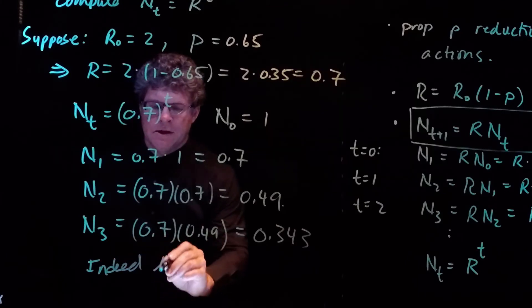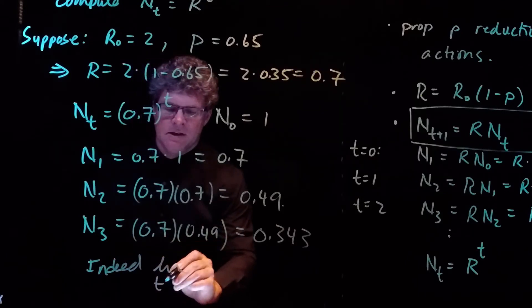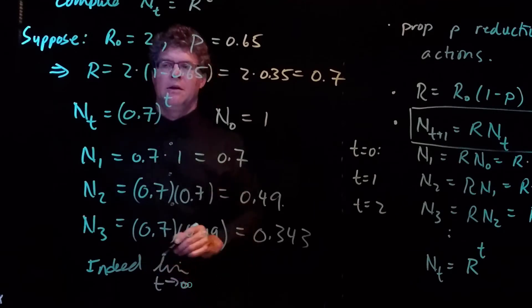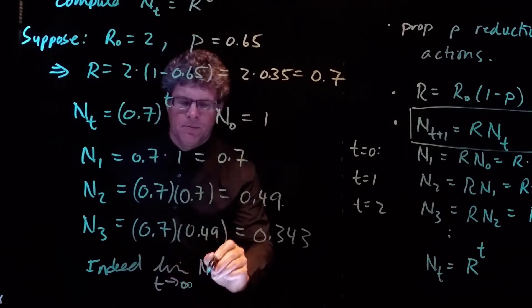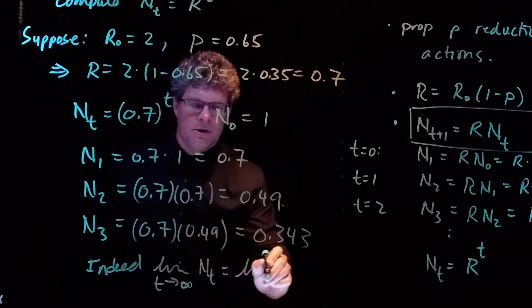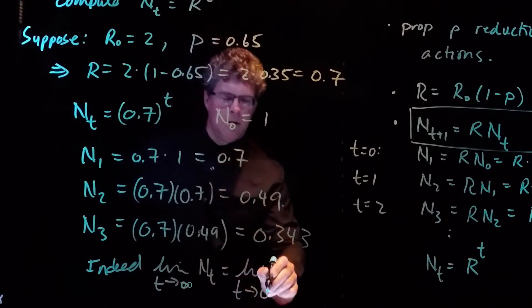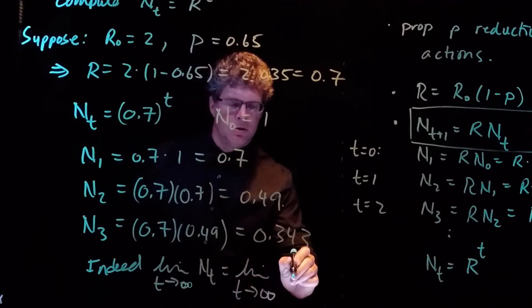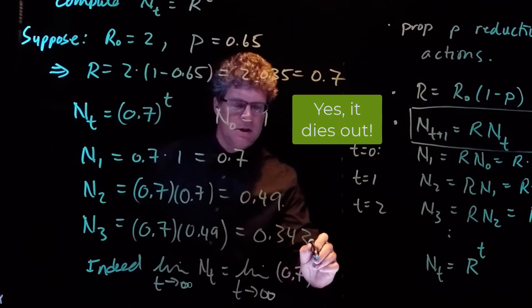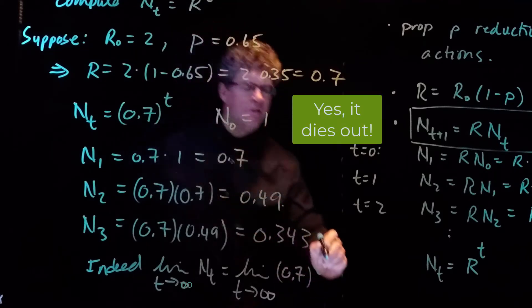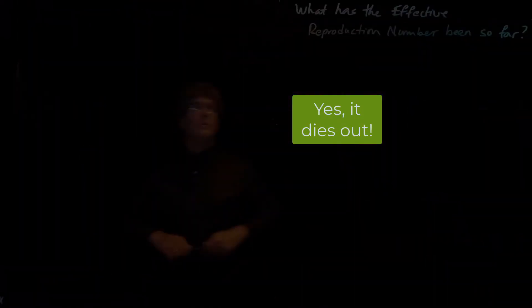Indeed, if we take the limit as t goes to infinity of N_t, this is the limit as t goes to infinity of 0.7 to the t power, and this is going to go to 0.